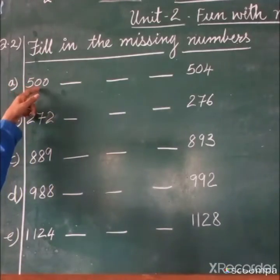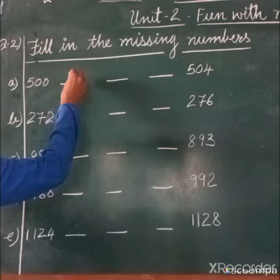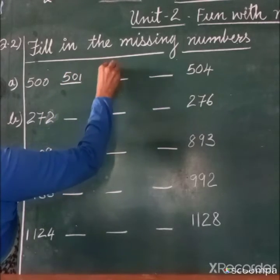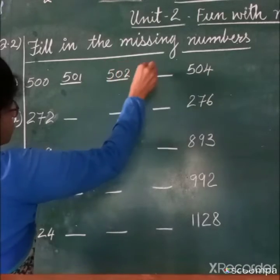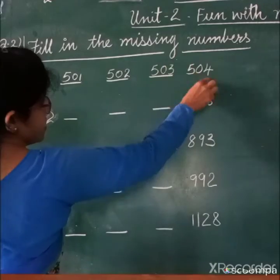Which numbers are missing? 500, then what is the next number? 501, then 502, then 503, 504.